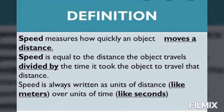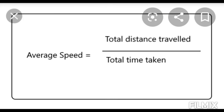The formula of speed is total distance covered upon total time taken. S for speed, total distance is denoted by D, and total time is denoted by T.